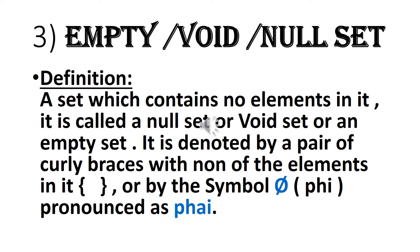A set which contains no element in it is called a null set, void set, or empty set. It is denoted by a pair of curly braces with no elements in it, or by the symbol φ (phi).